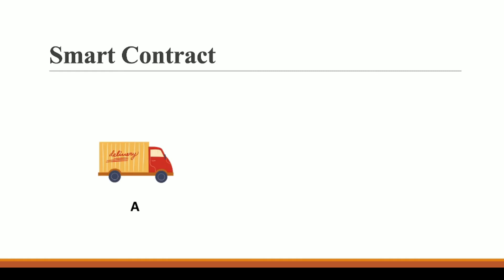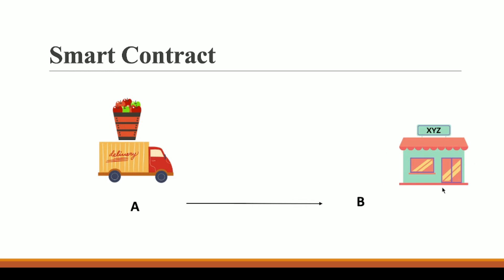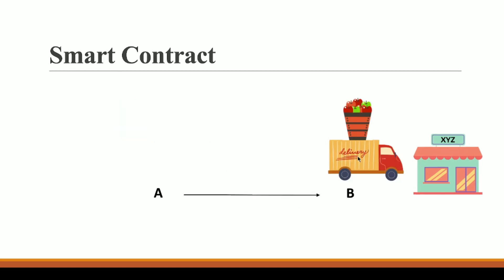Let's take an example. Person A has a food delivery truck and delivers fruits — we can think of him as a food supplier. He delivers food to shopkeeper B who has a shop XYZ. Once B receives the food, he sells it to his customers. Once delivery is done, B pays money to A. But after some time, B realizes the apples sent by A are rotten, so B is at a loss.